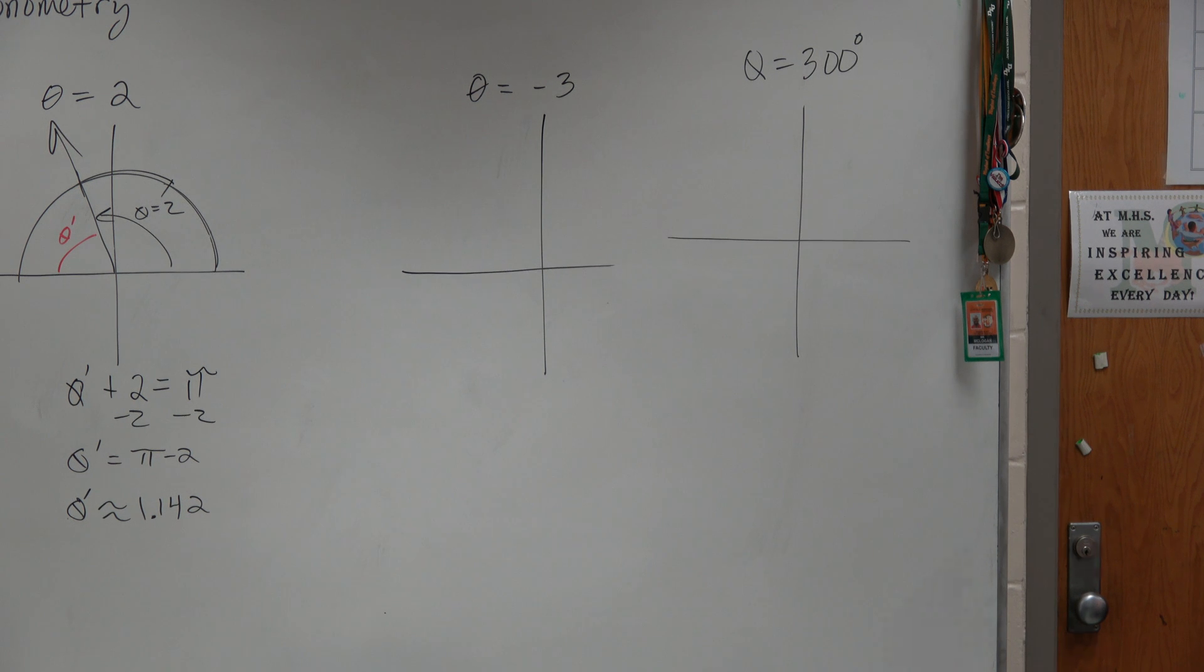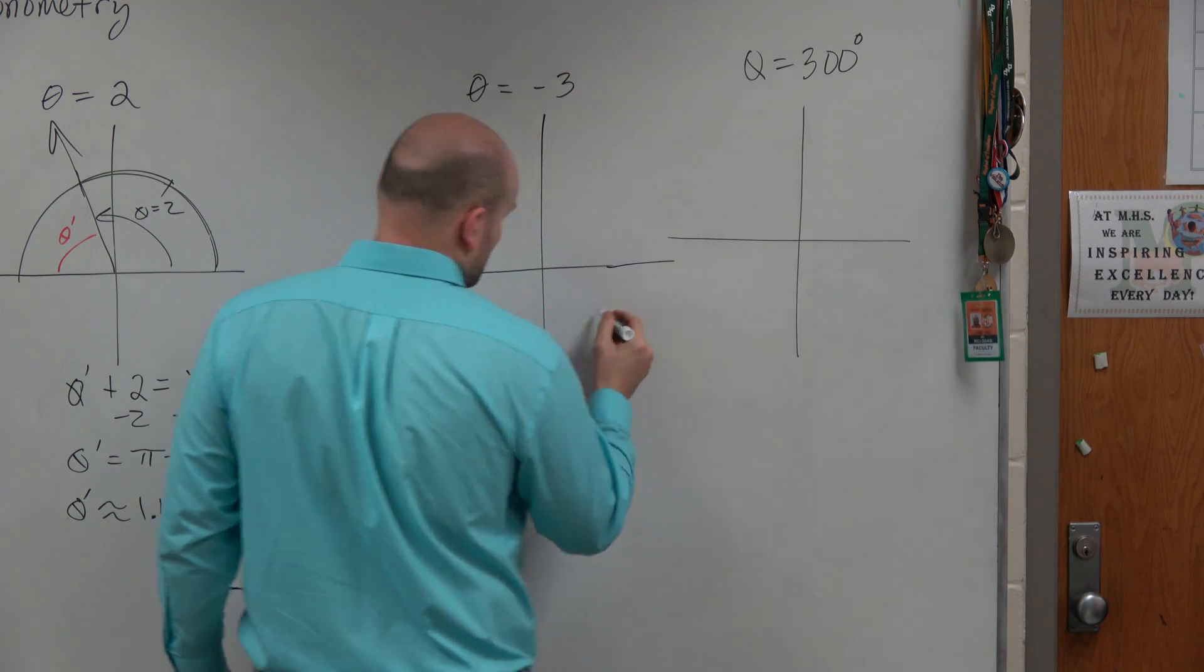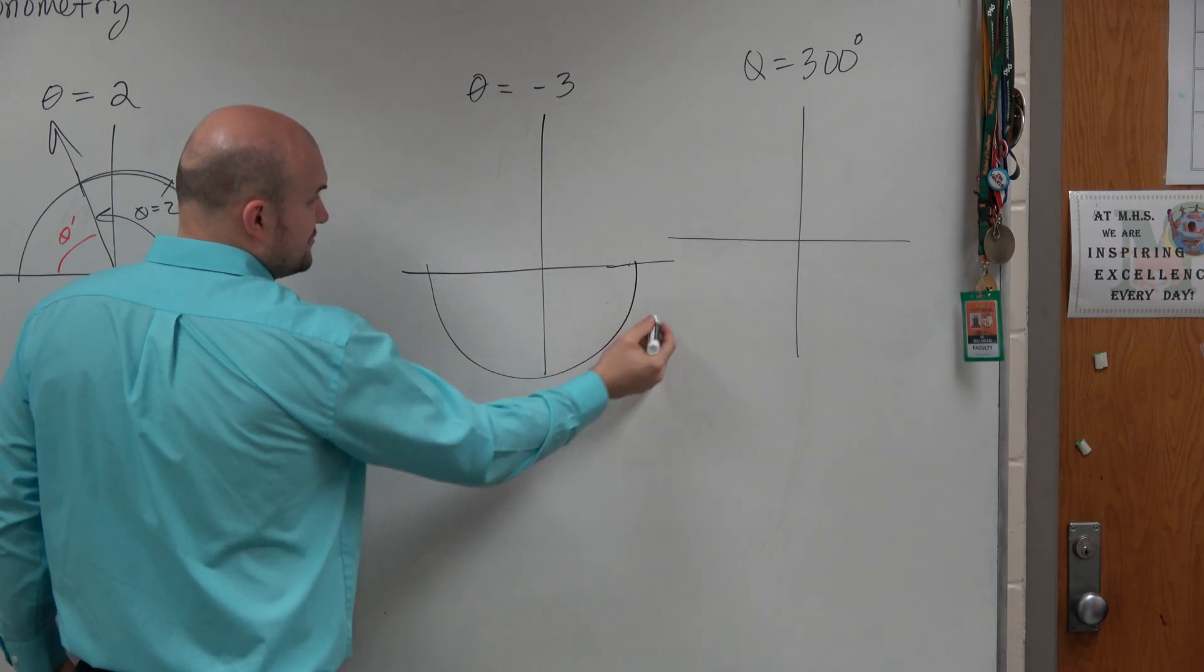So when we're dealing with a negative angle, we have negative 3. That's now going to, so now we're going in the negative direction.